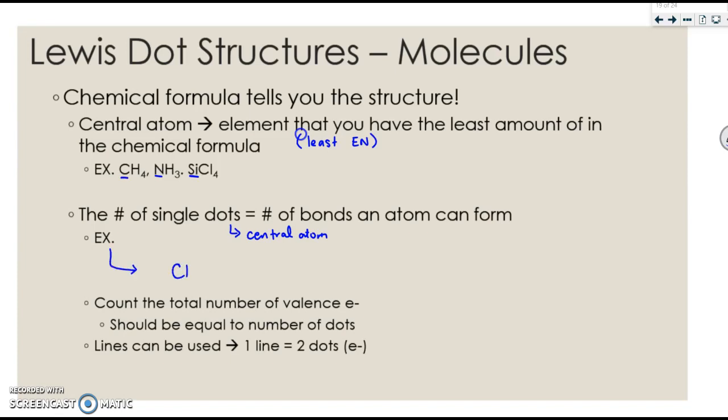For example, CH4, carbon goes in the middle. It's in group 4A, so it would get four dots. That means it can make four bonds. And conveniently, there are four H's, so they each bring in their dot. And that would be your dot structure.